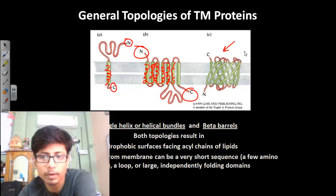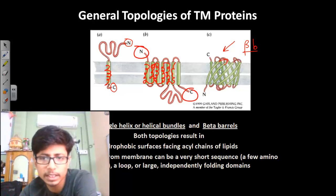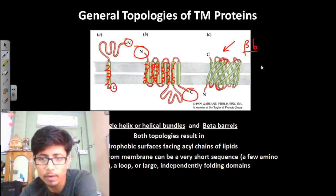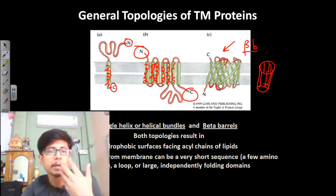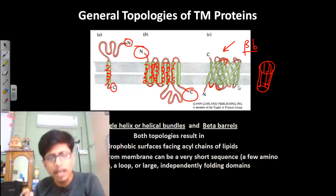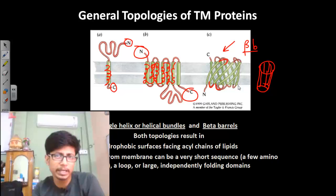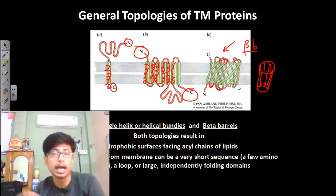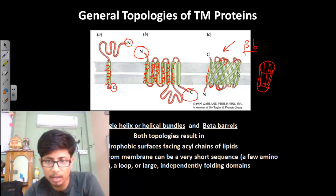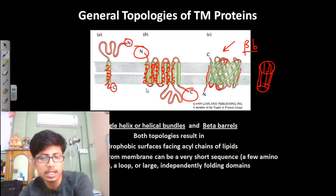The third topology is the beta barrel, which is made up of beta sheets arranged one after another, with loops attaching them in a counterclockwise arrangement to form a barrel shape. The outside region of the barrel interacts with the lipid molecules. Beta strand structures are made up with hydrophilic amino acids, so the outside region facing the lipid should be hydrophobic, while inside the barrel there are hydrophilic sections.